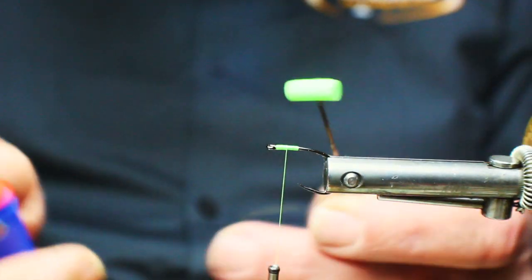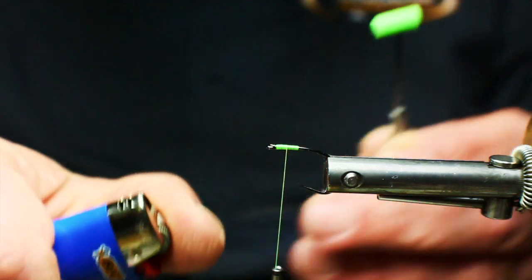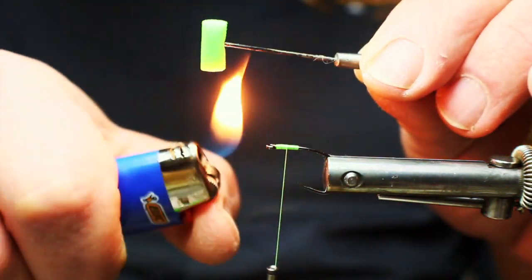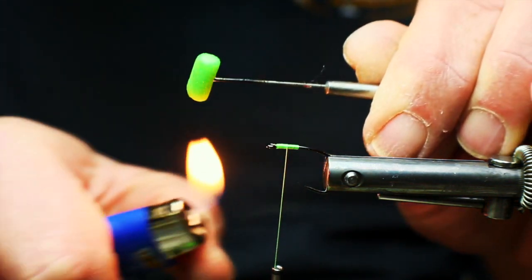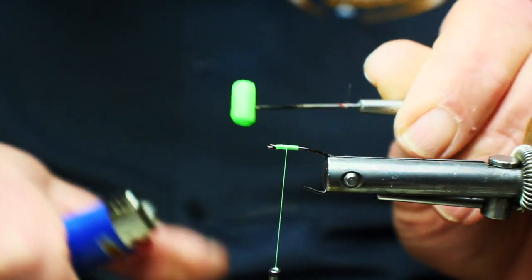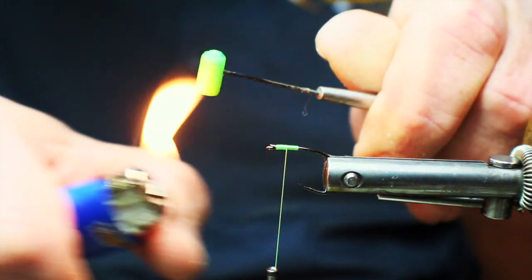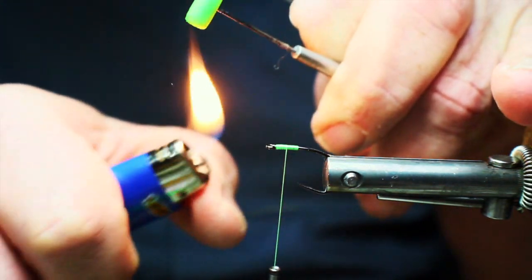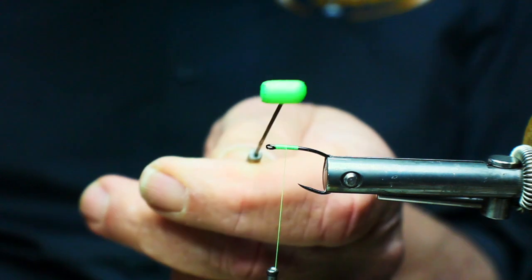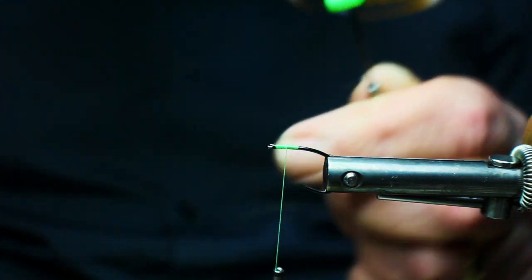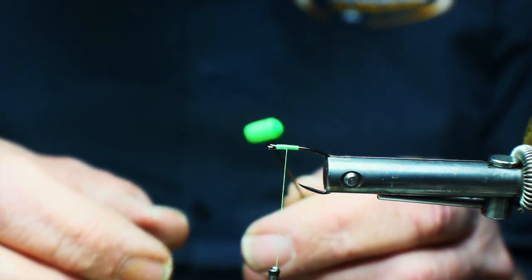We can just take another small piece, and we'll just take our lighter, and we'll round out the corners. You can see that—be careful, so you don't burn it too much. But that, you can see, is rounded out the corners quite nicely. Let that cool before we start our wrap.